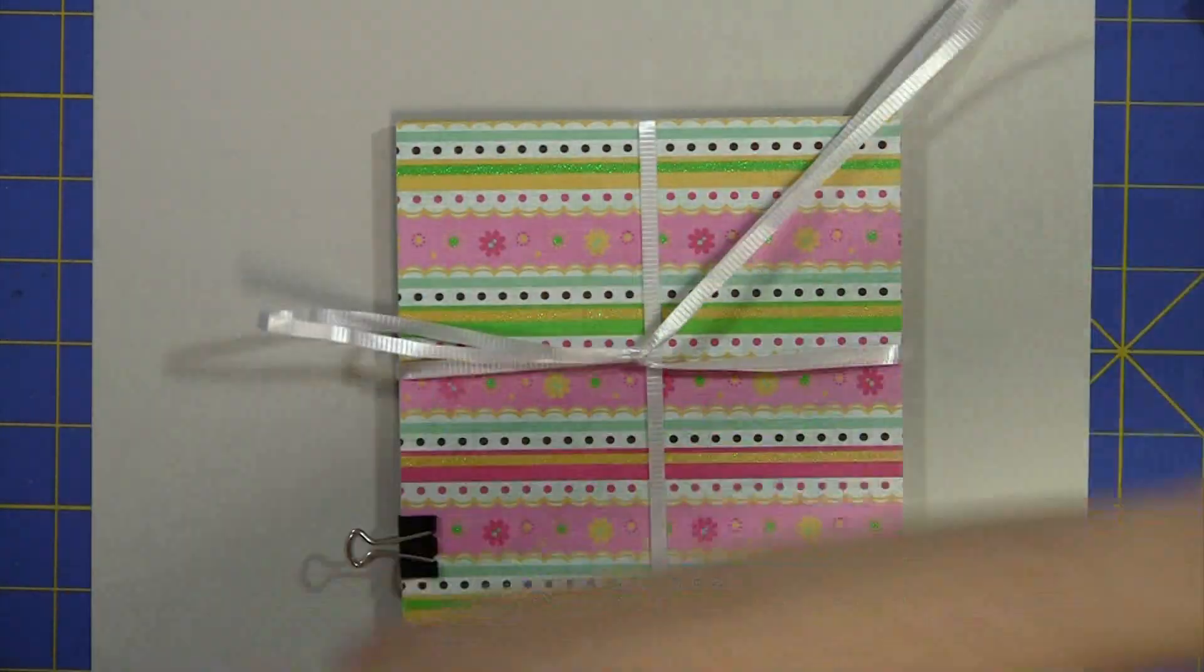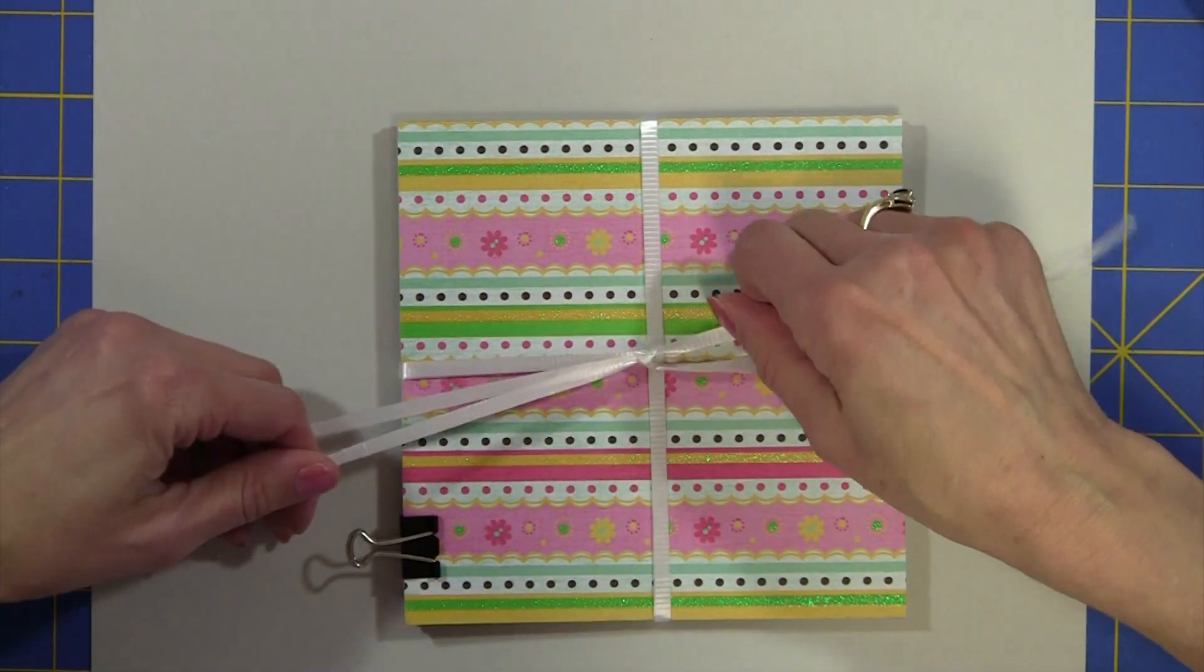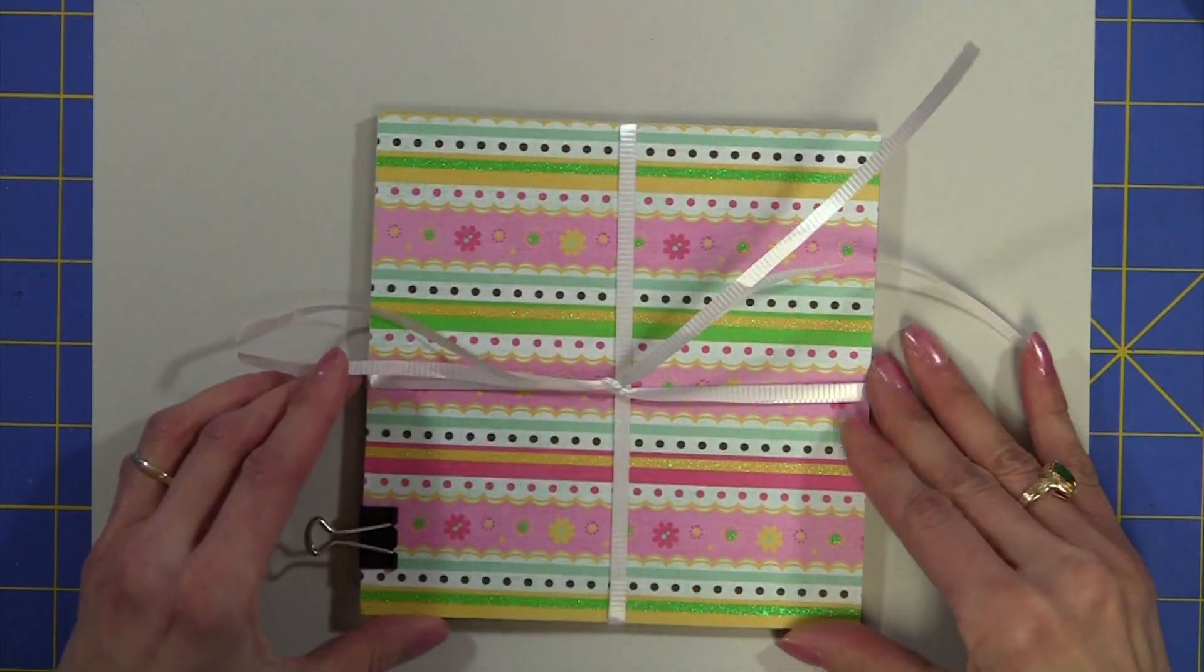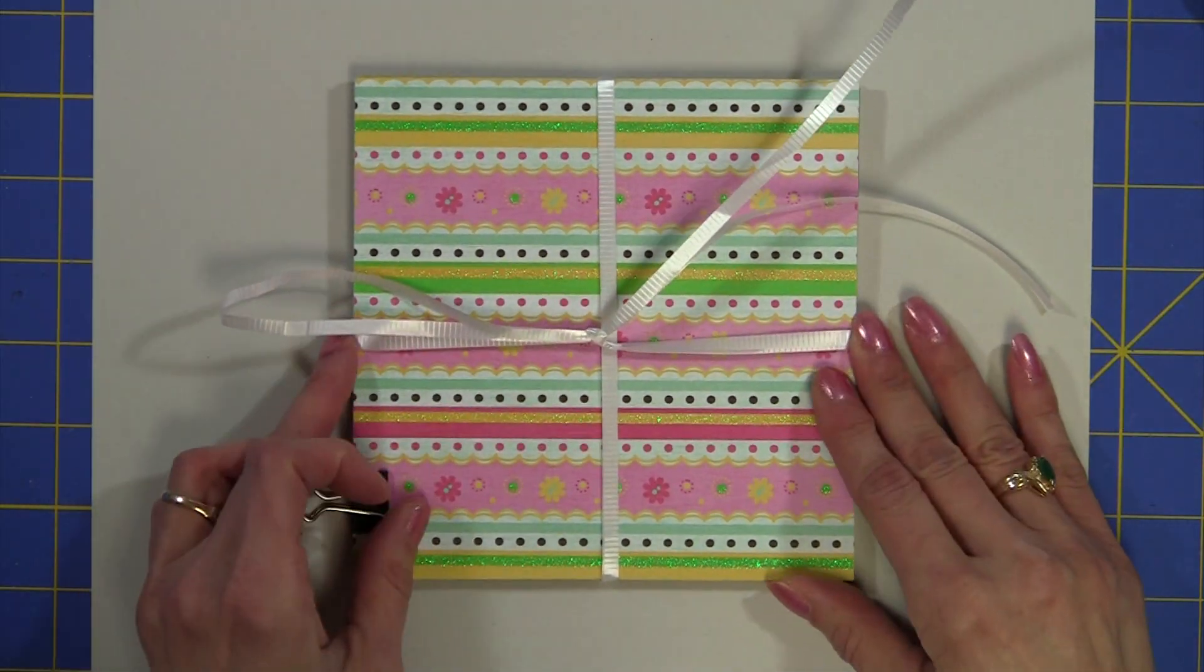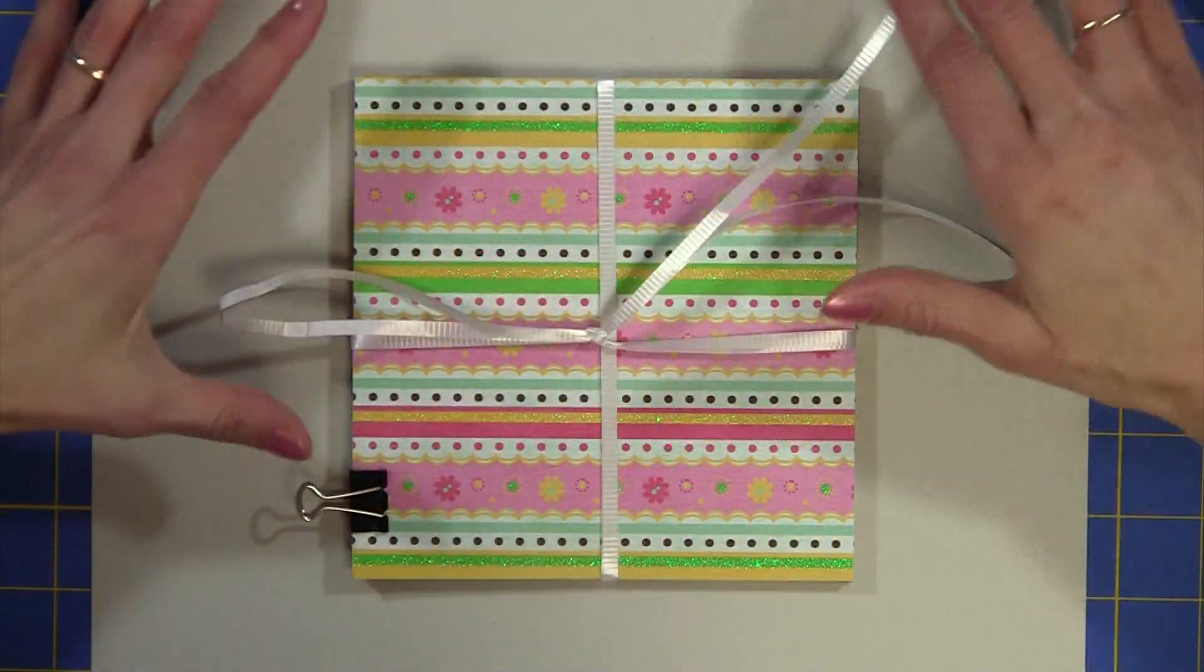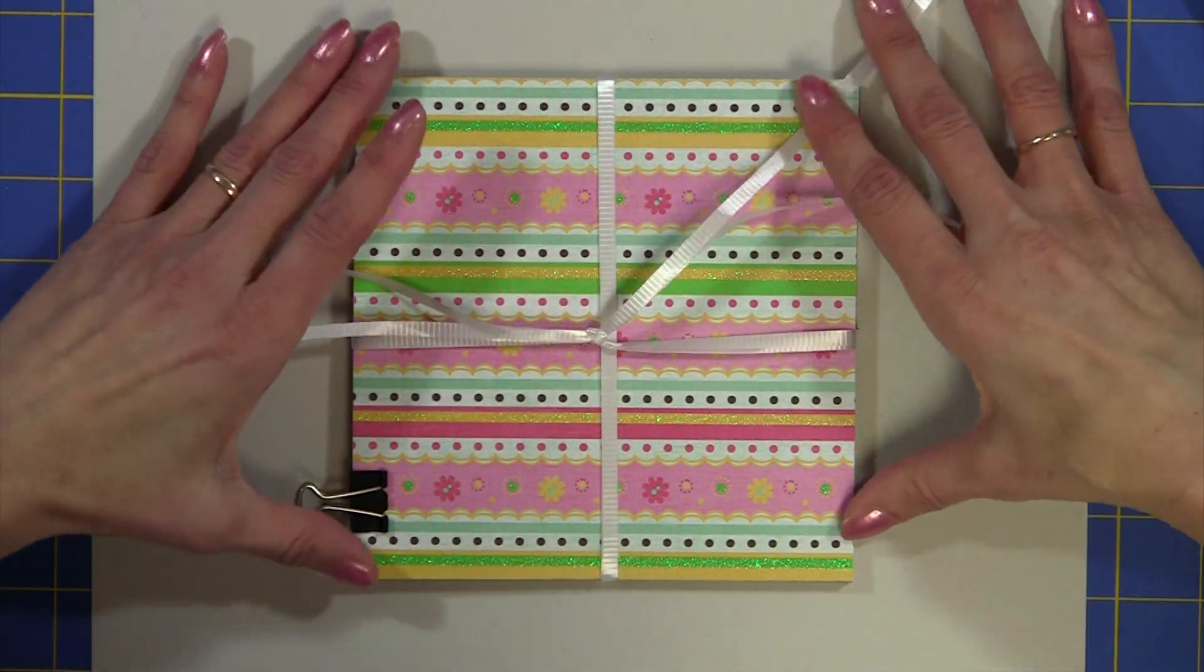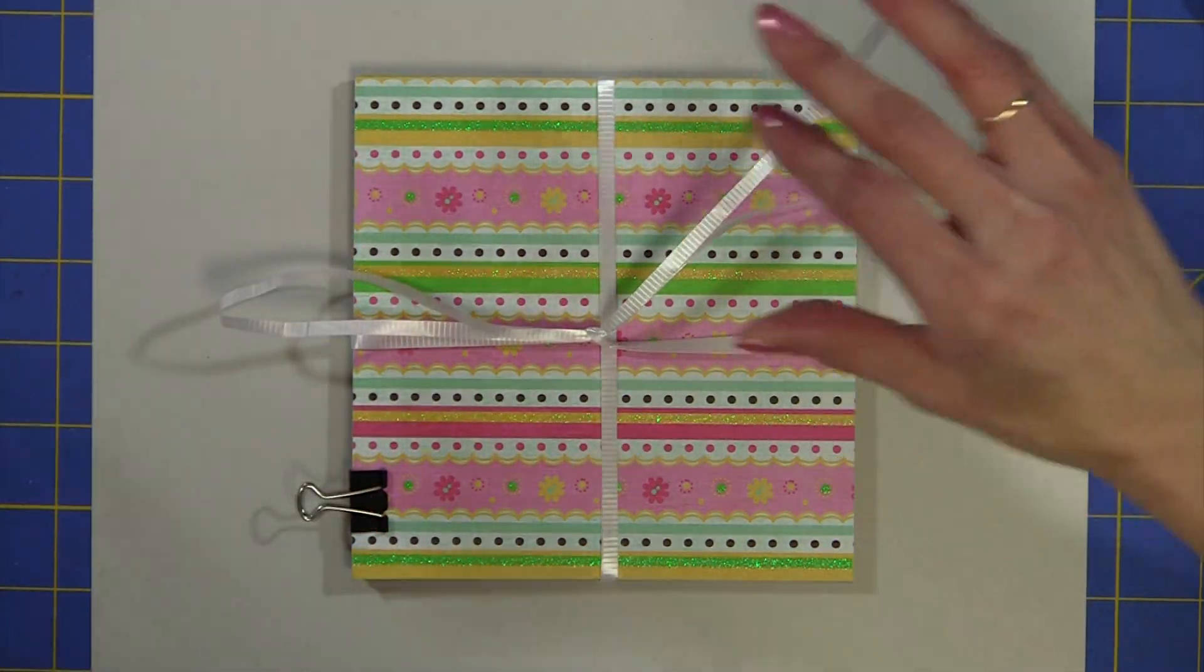I'm just going to pull it down and I'll probably go ahead and trim this just so it doesn't get in our way we're going to curl this later and then I just kind of move it around until we get it in the center and this length will depend on how deep your package is.